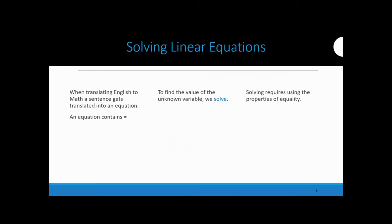When solving linear equations, you sometimes start with word problems. Sentences in English get translated to equations — the word 'is' is your verb and tells you where your equal sign goes. A linear equation always has an equal sign. If you don't have an equal sign, you don't have an equation.